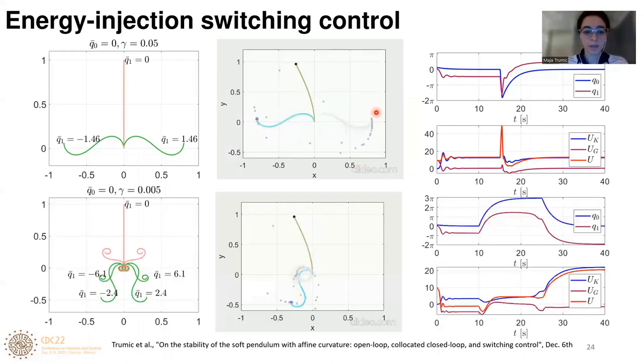A bit more complex case is for this gamma equal to 0.005. The pendulum initially falls into this equilibrium q1 bar equals to minus 2.4, but we would like it to reach this one, minus 6.1. Here we first need to swirl the pendulum around the base and then we regulate it to q1 bar equal to minus 6.1.